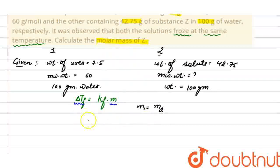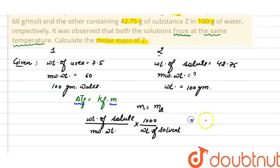Now, put the values. What is the formula of molality? Weight of solute divided by molecular weight of solute into 1000 divided by weight of solvent. And same here, that is the molality of the second solution. Put values here. What is weight of solute? That is weight of urea is 7.5 divided by molecular weight is 60 into 1000. What is the weight of solvent? That is 100 equals to molality of second solution. That is weight of solute, weight of unknown substance is 42.75, divided by molecular weight into 1000 and the weight of solvent is 100.